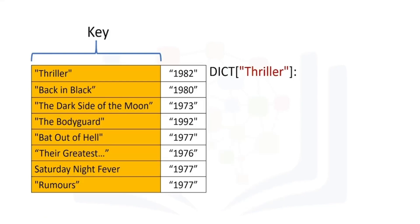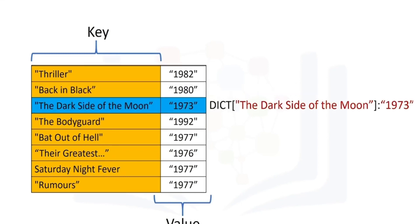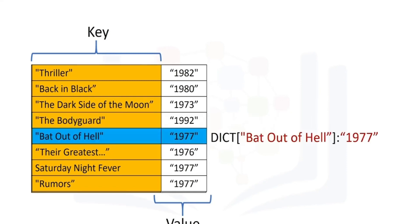The key is used to look up the value. We use square brackets, where the argument is the key, and this outputs the value. Using the key 'Back in Black' returns the value 1980. The key 'The Dark Side of the Moon' gives us the value 1973. Using the key 'The Bodyguard' gives us the value 1992, and so on.